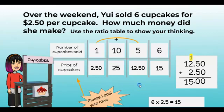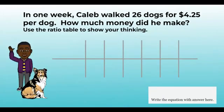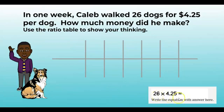Now, this one: we have Caleb, who is walking dogs. He walked 26 dogs in one week, and he charged four dollars and twenty-five cents per dog. We're going to calculate how much he would make in total, so the operation is multiplication. We write down our equation: 26 times four dollars and twenty-five cents, or four and twenty-five hundredths. That might look difficult, but we're going to use this fabulous strategy.